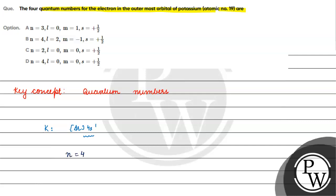n equals 4. For an s orbital, L value is 0.